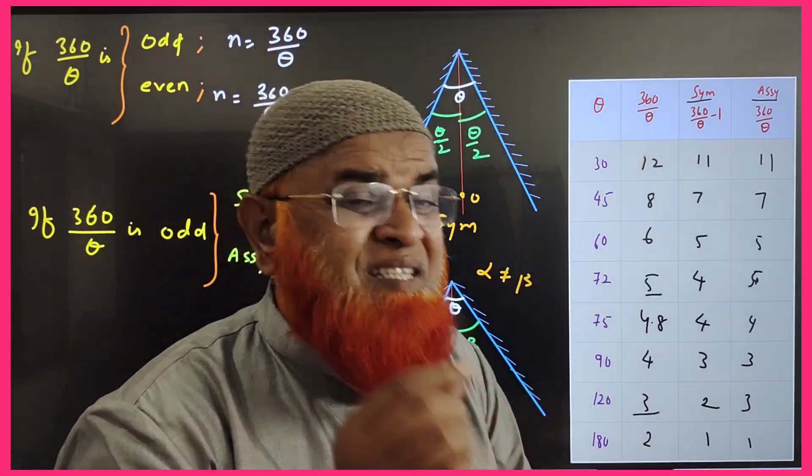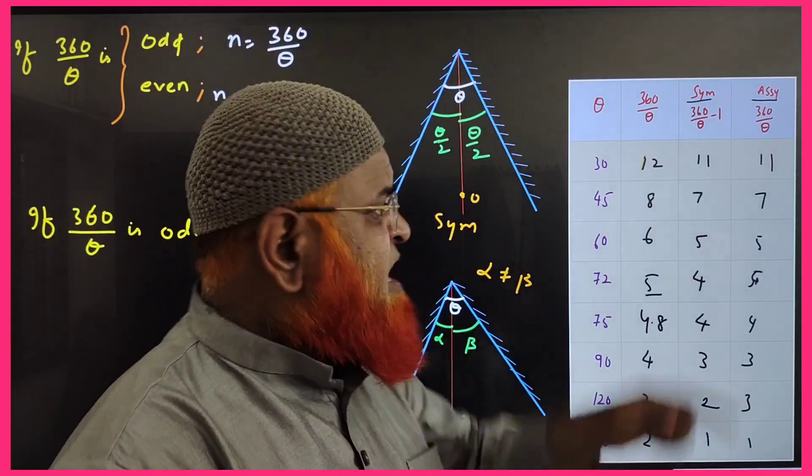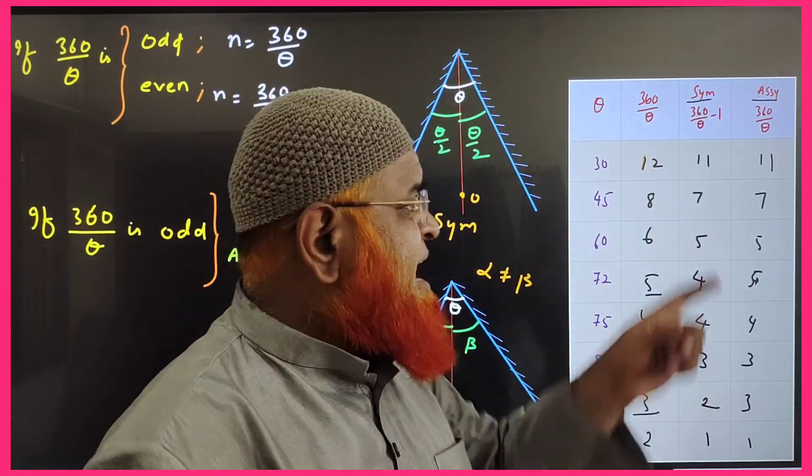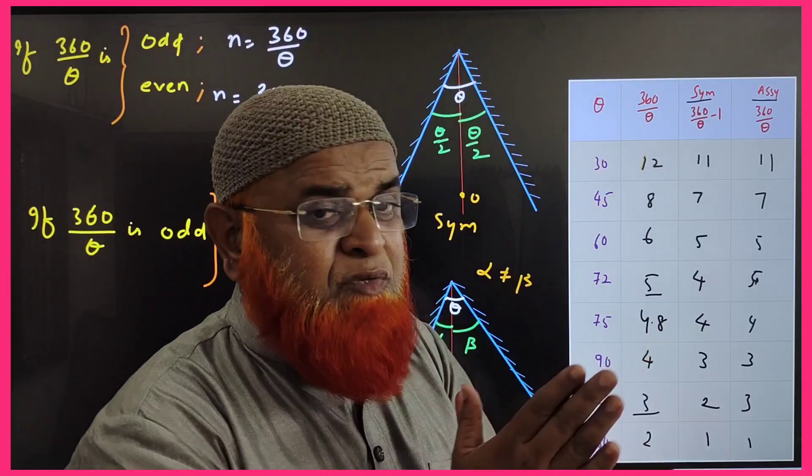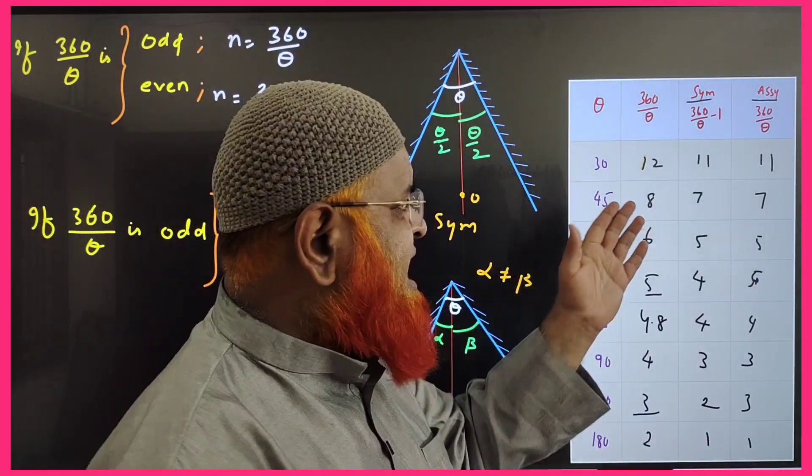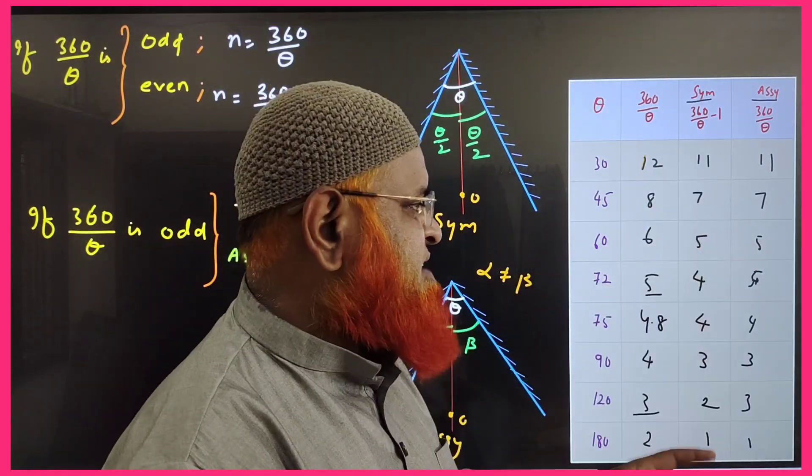After getting these values, you have to see whether it is an even or an odd value. If it is an even value, you have to subtract with 1 and write 11, 11—because for even values there are no sub cases like symmetry and asymmetry. Directly you will be writing the answer: 11, 11, again 8, 7, 7, 6, 5, 5—no sub cases for even.